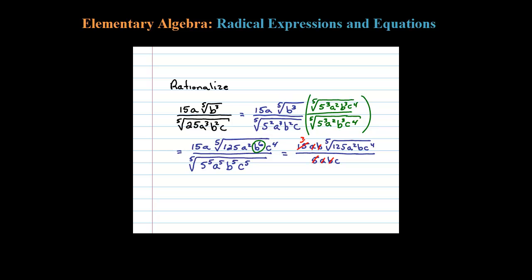And 5 goes into that 15 three times. So what's left would be 3 times the fifth root of 125 a squared bc to the fourth, all over c. Multiply by what you need to get those exponents equal to the index, and then you can eliminate the radical that way. The final fraction is equivalent to the original, with no radical in the denominator.